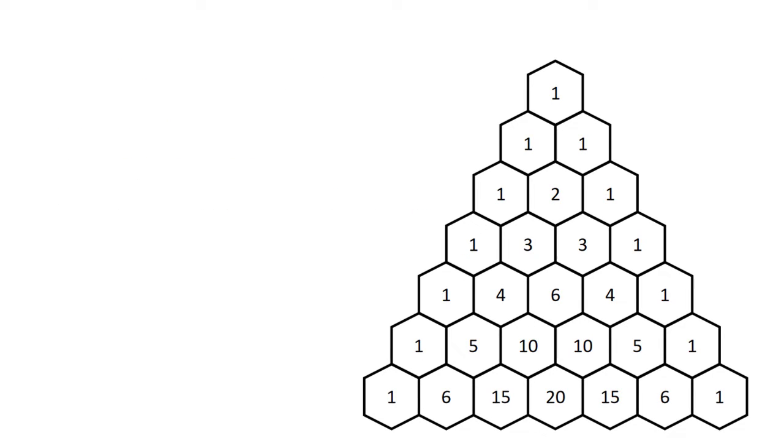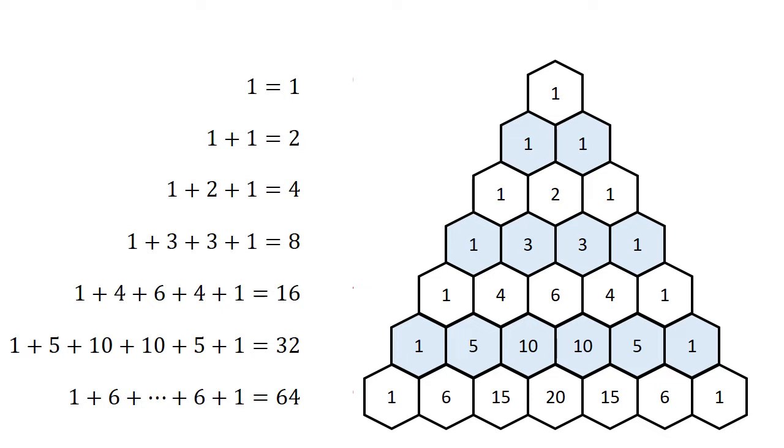So first check if you've completed the next row correctly. Now let's look at some beautiful patterns hidden. If we take the sum of each row, we would get 1, 2, 4, 8 and so on. Notice that these are the powers of 2.